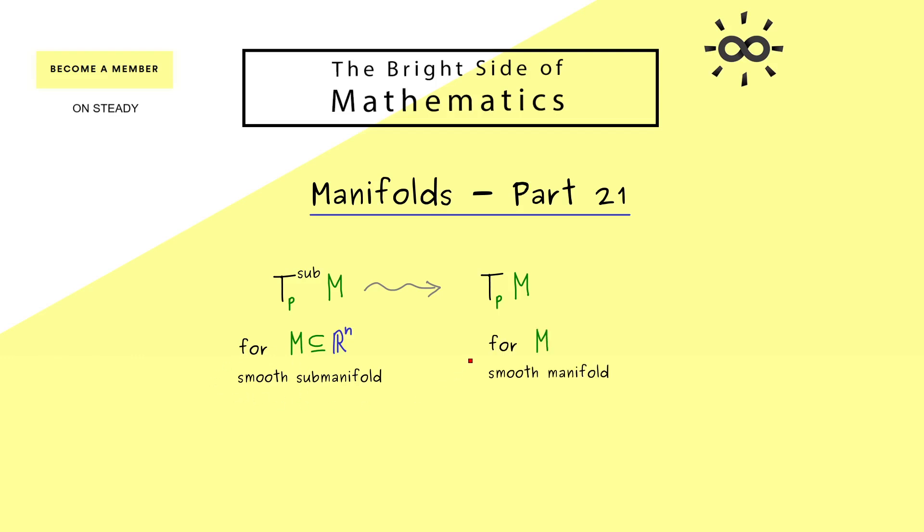Hence this left hand side here only exists if M is a subset of R^n, and we always take a smooth manifold here. And we have the same on the right hand side, but here you see the manifold does not have to be embedded into R^n. So this is what we call an abstract manifold, because we don't need any space around it.